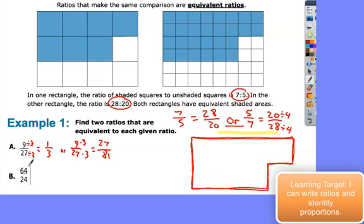Think about what we did in the past with simplifying fractions to get the same fraction that just looks different. So here with 64 24ths, I have a couple options. I could divide by 2. If I divide by 2, I end up with 32 over 12. Or if I just divide by 8 the whole way down, I get 8 to 3. So it's pretty easy to find equivalent ratios.